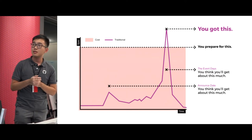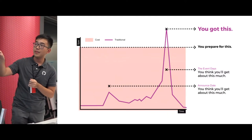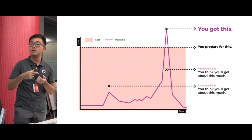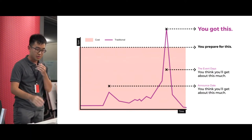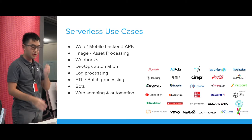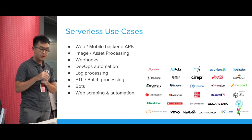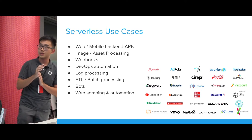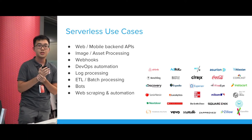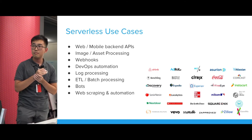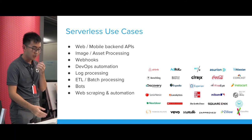With serverless, actual usage will match the traffic graph exactly, because the platform spawns an equal number of function processes to the number of incoming requests, so you don't pay for idle compute resources. Serverless can be used for APIs, backends, and asset processing — it's surprisingly applicable to many use cases. But it's not suited for some cases, like where you need a lot of disk space or long-running tasks that exceed the timeout limits of serverless functions.